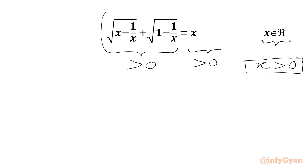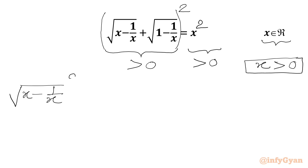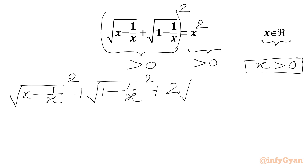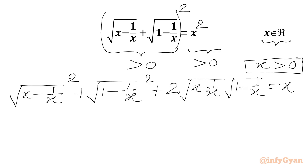Now we are going to square both sides. We will be using the (a+b)² formula on the left hand side. So we can write: square root of (x − 1/x) whole square, plus square root of (1 − 1/x) whole square, plus 2 times square root of (x − 1/x) times square root of (1 − 1/x), equal to x².